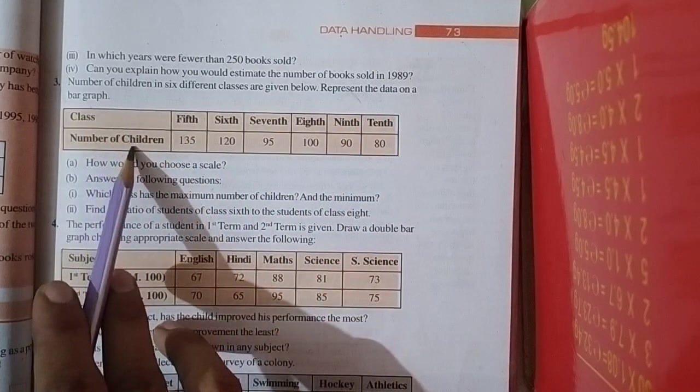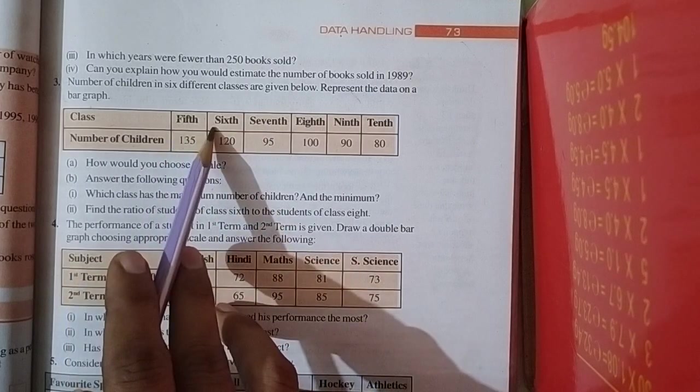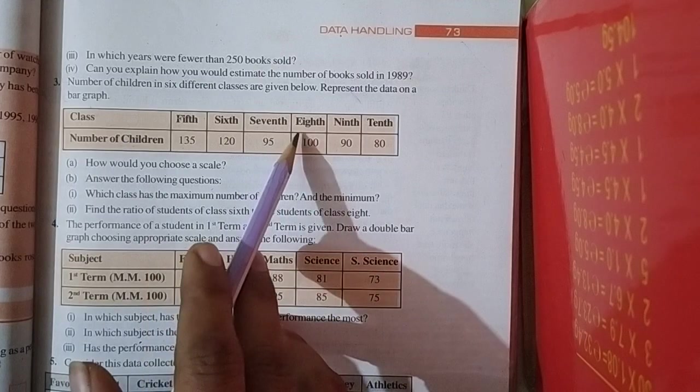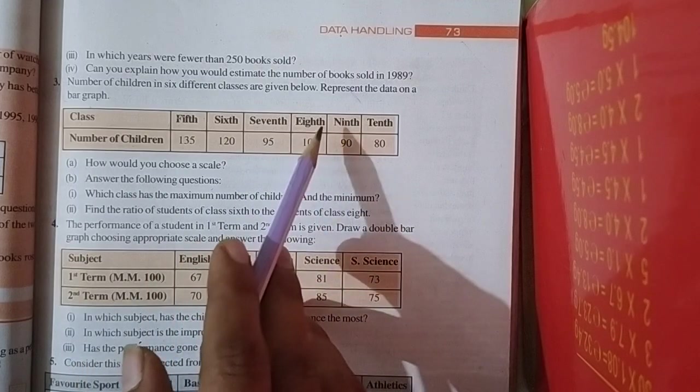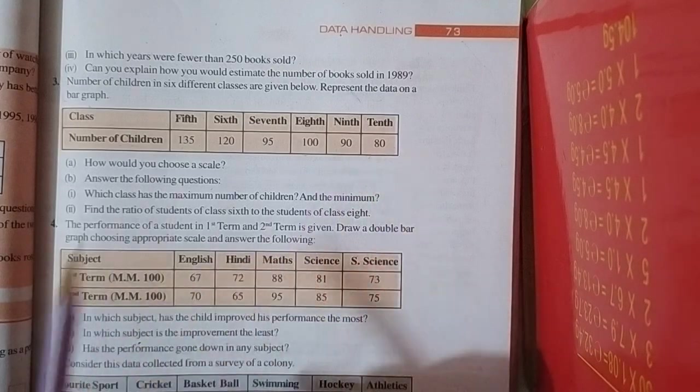Class and number of children: 5th class 135, 6th class 120, 7th class 95, 8th class 100, 9th class 90 and 10th class 80.